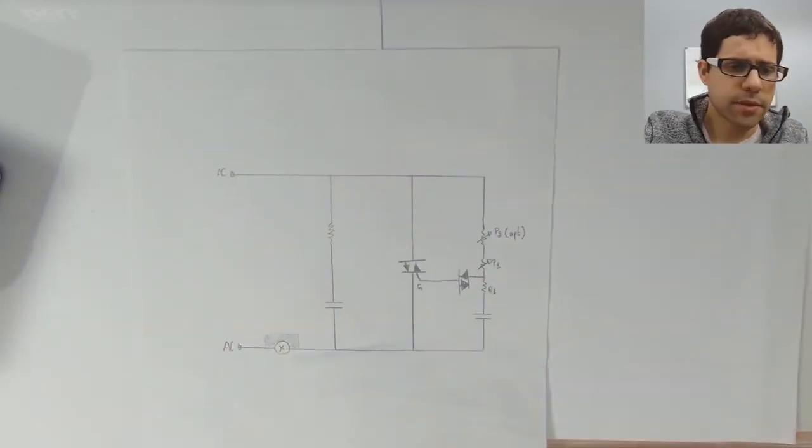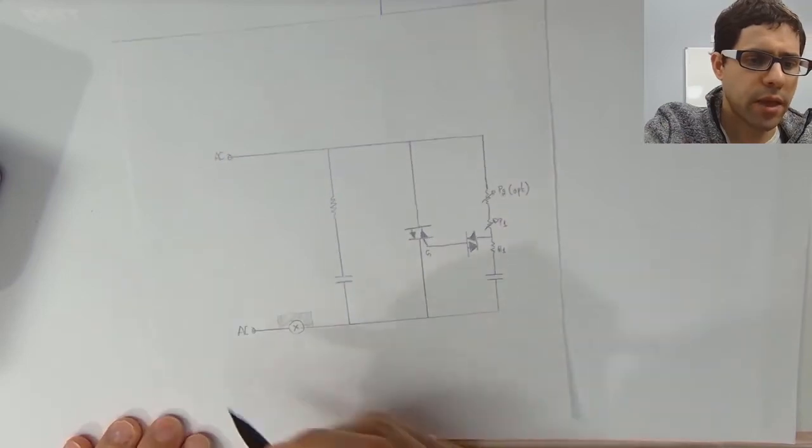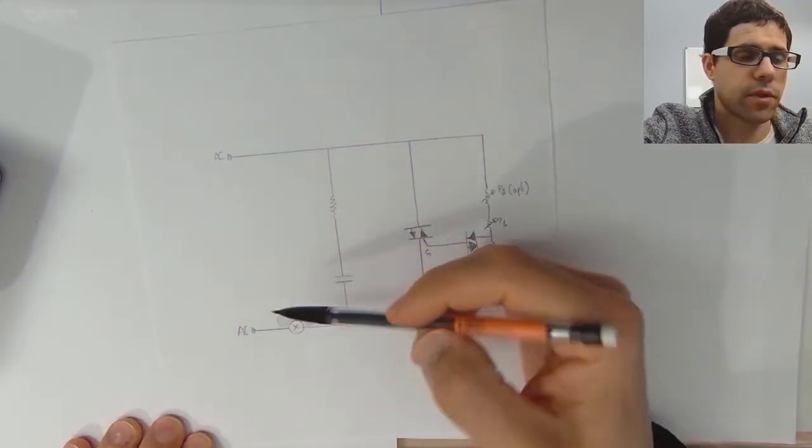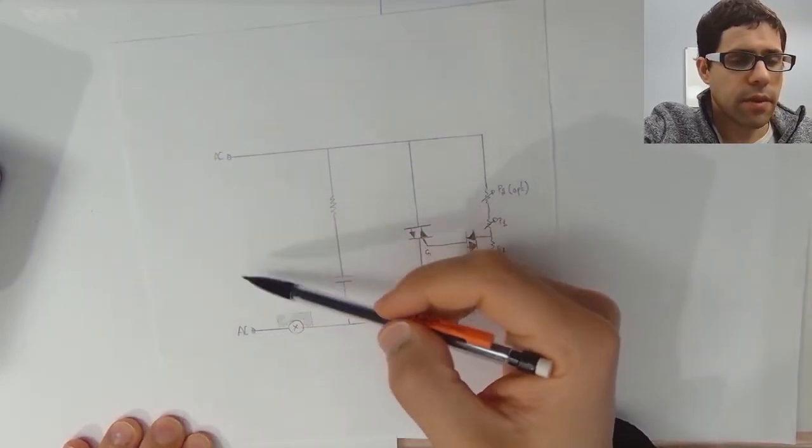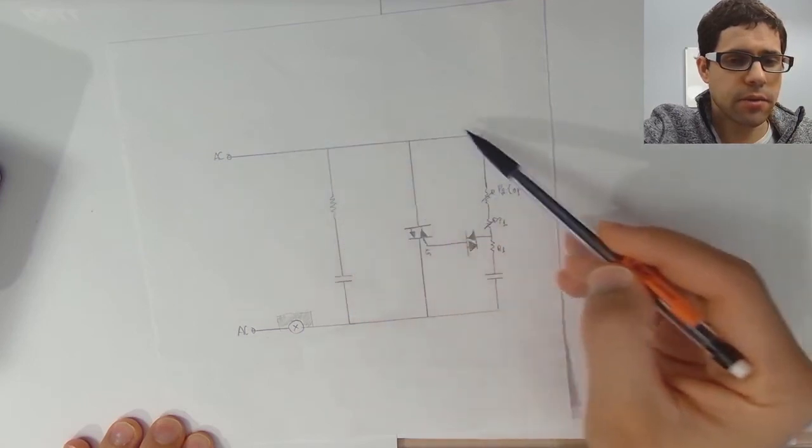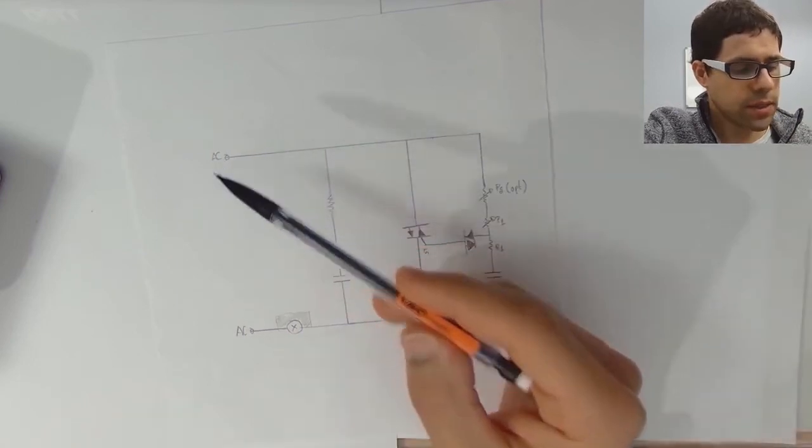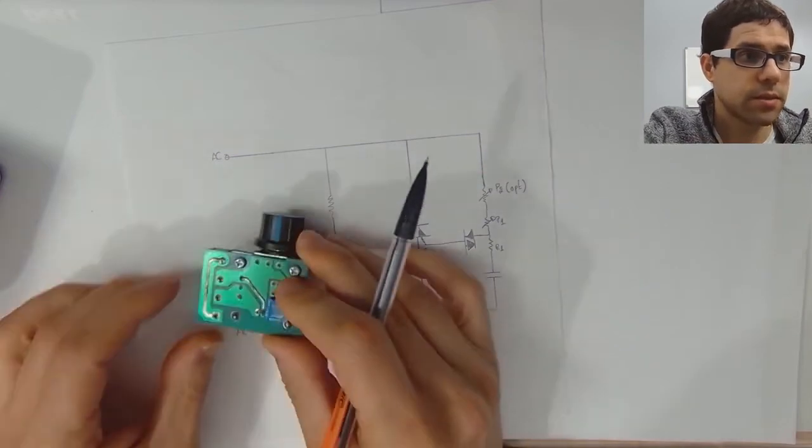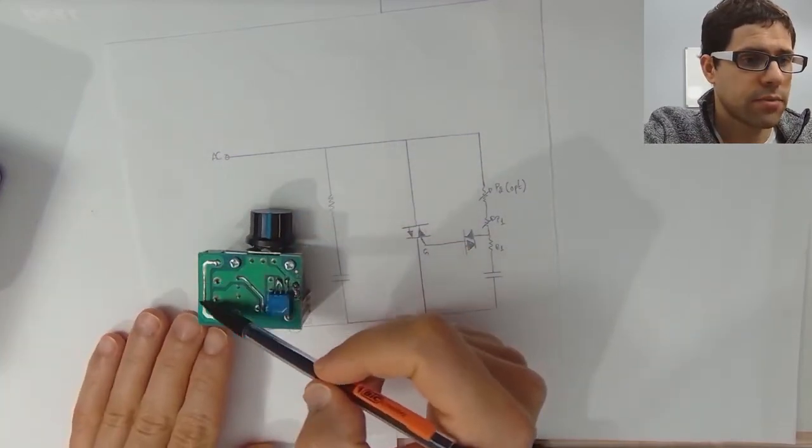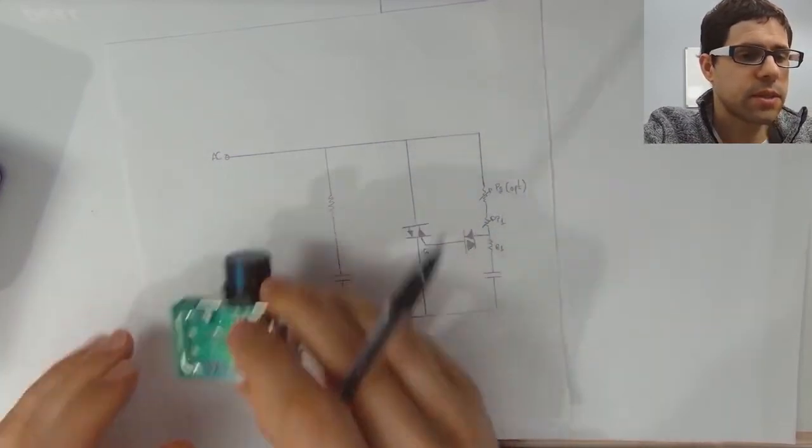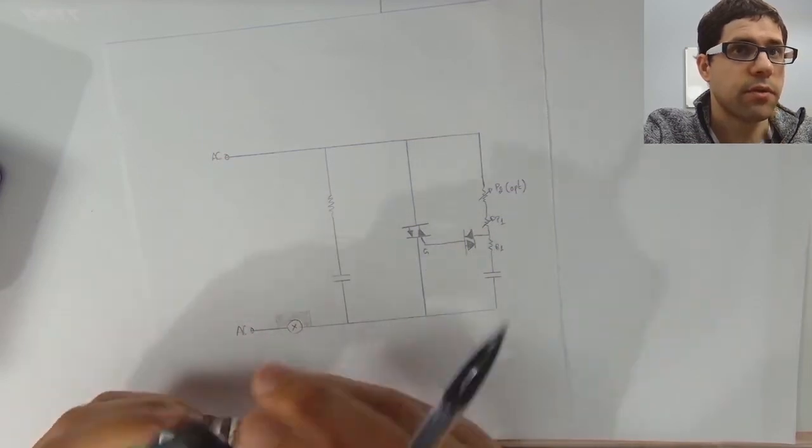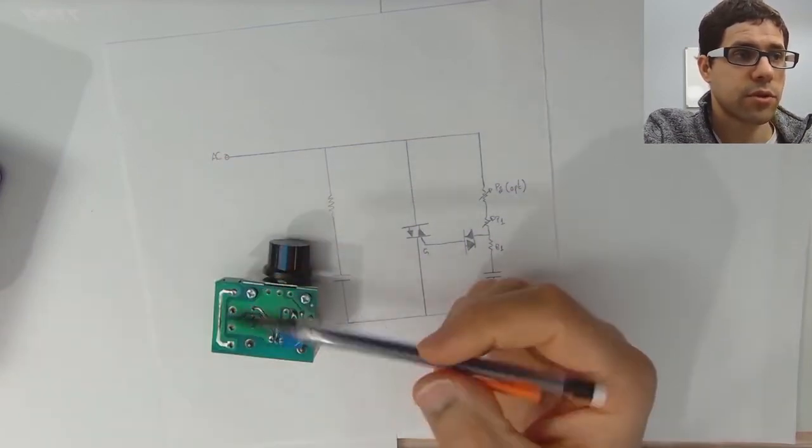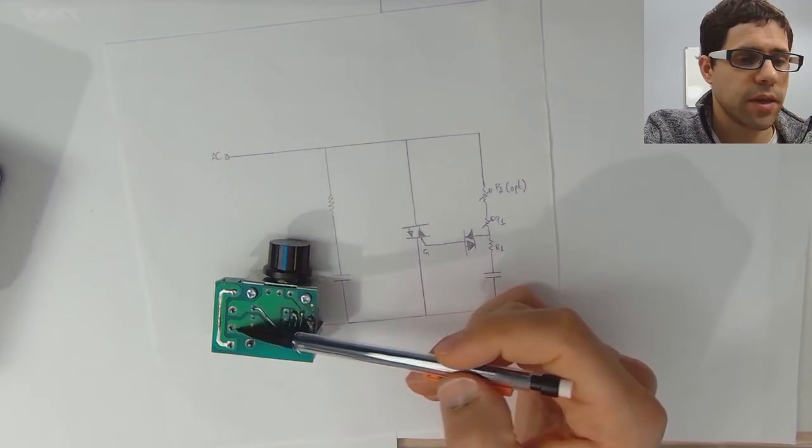Here we have a schematic. The way this works is normally with the supply you have the phase and the neutral. This circuit doesn't require a neutral, it works in series with the supply. The neutral passes right through, it's not used as a reference. The phase is these two terminals.